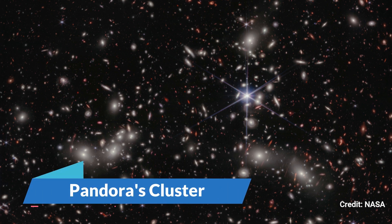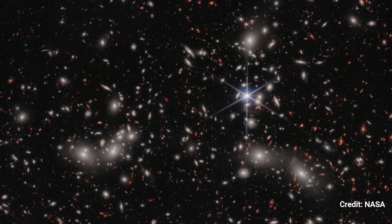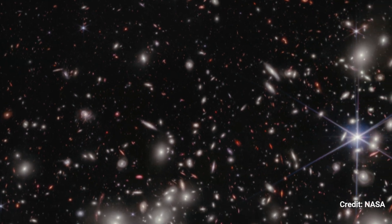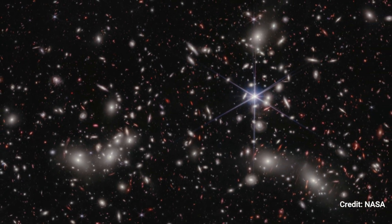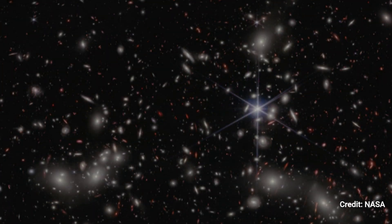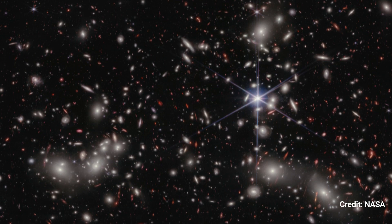Pandora's Cluster. Astronomers estimate that this picture from NASA's James Webb Space Telescope represents 50,000 sources of near-infrared light. Their light has traveled varied distances to reach the telescope's detectors, resulting in a single picture that represents the immensity of space.